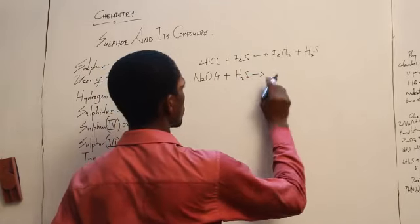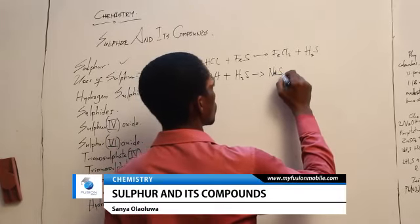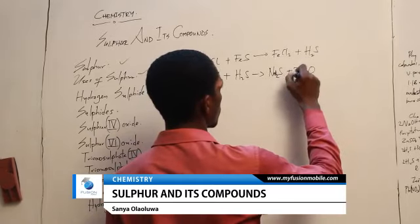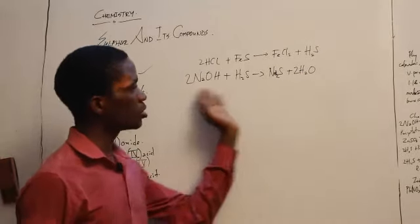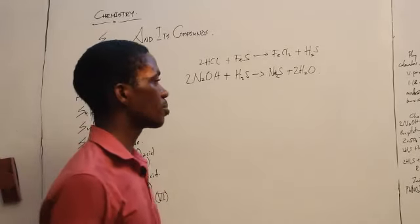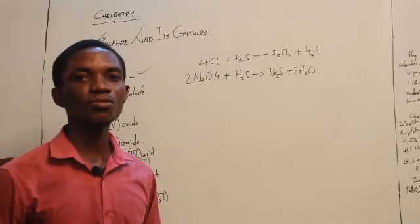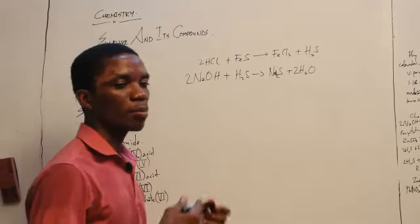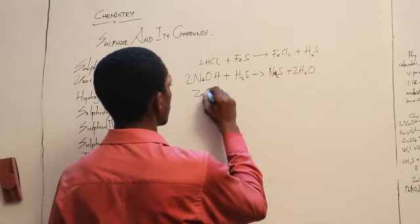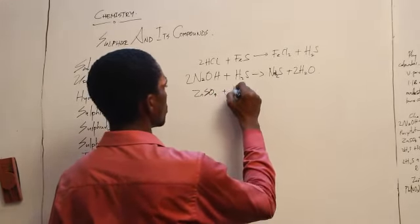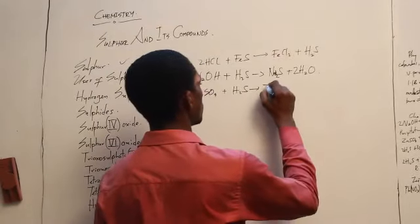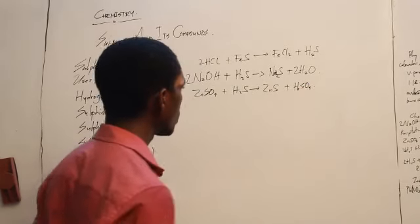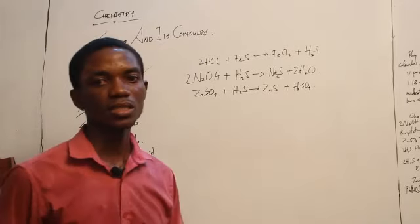When H2S reacts with sodium hydroxide, it produces sodium hydrogen sulfide (NaHS) and water. It is also a precipitating agent — most metallic sulfides are not soluble in water, so it usually precipitates substances. For example, if you have a zinc tetraoxosulfate 6 solution and bubble H2S gas through it, it will produce zinc sulfide and tetraoxosulfate 6-acid. Your zinc sulfide will precipitate out as a white solid.